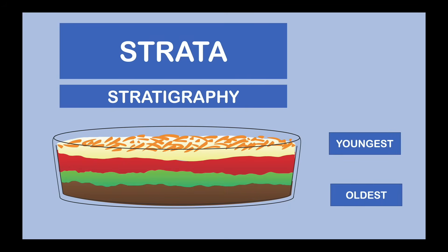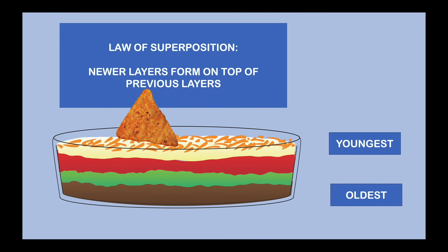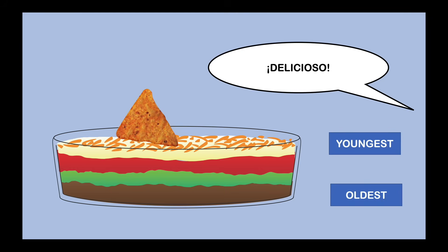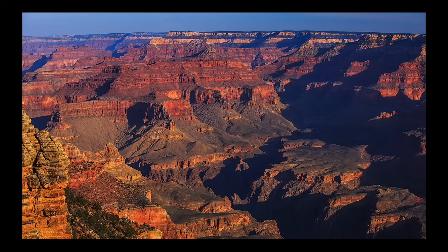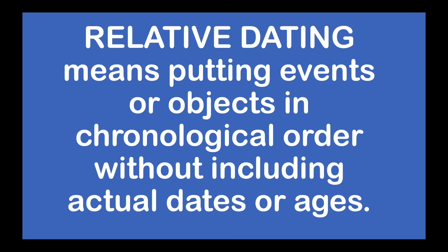Stratigraphy is the scientific study of layers, and that's usually something we study in rocks. If you want to really impress people at your party while eating your tasty five-layer bean dip, you can tell them that this bean dip observes the law of superposition — that means that the newer layers form on top of previous layers. If you go someplace like the Grand Canyon, where there are a lot of exposed earth layers, you'll see that the oldest layers are found at the bottom and the youngest layers at the top. So relative dating means putting events or objects in chronological order without including actual dates or ages.